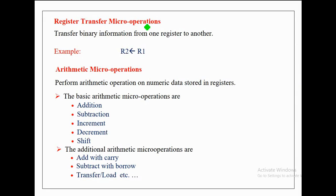Transferring of binary information from one register to another register is known as register transfer micro operations. Here, R2 with a replacement operator followed by R1 is an example for register transfer micro operation. R1 is the source register and R2 is the destination register. This arrow mark is also called the replacement operator, and it indicates the direction of data transfer.